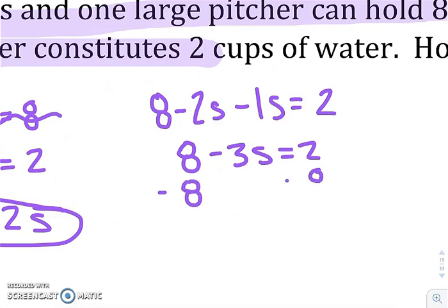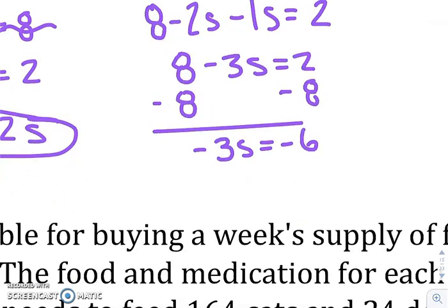Subtract the eight. Negative three S equals negative six. So when you divide six by three, you get S to be two.